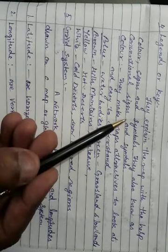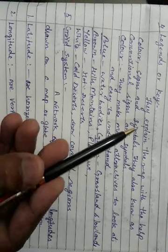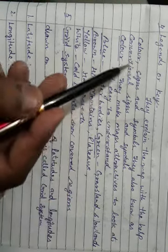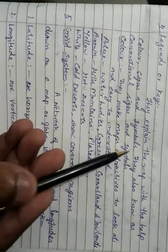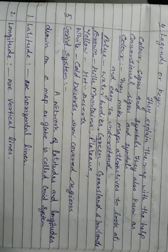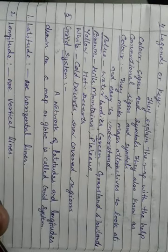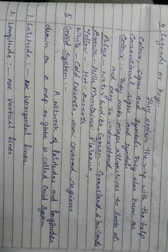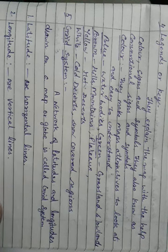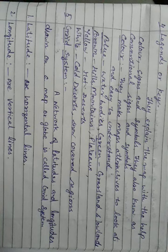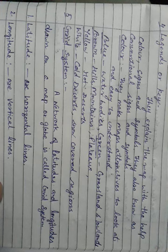Legends are an important part of a map. They explain the map with the help of color, signs, and symbols. They are also known as conventional signs and symbols because they have been determined by conventions. These symbols have been agreed upon and accepted internationally. Therefore, we call them conventional signs and symbols.